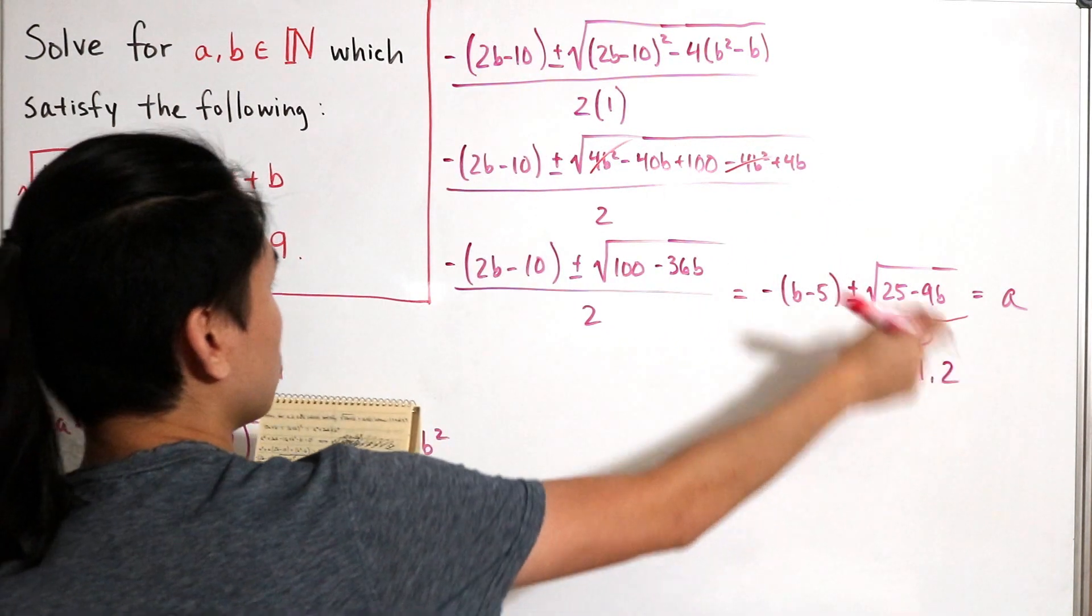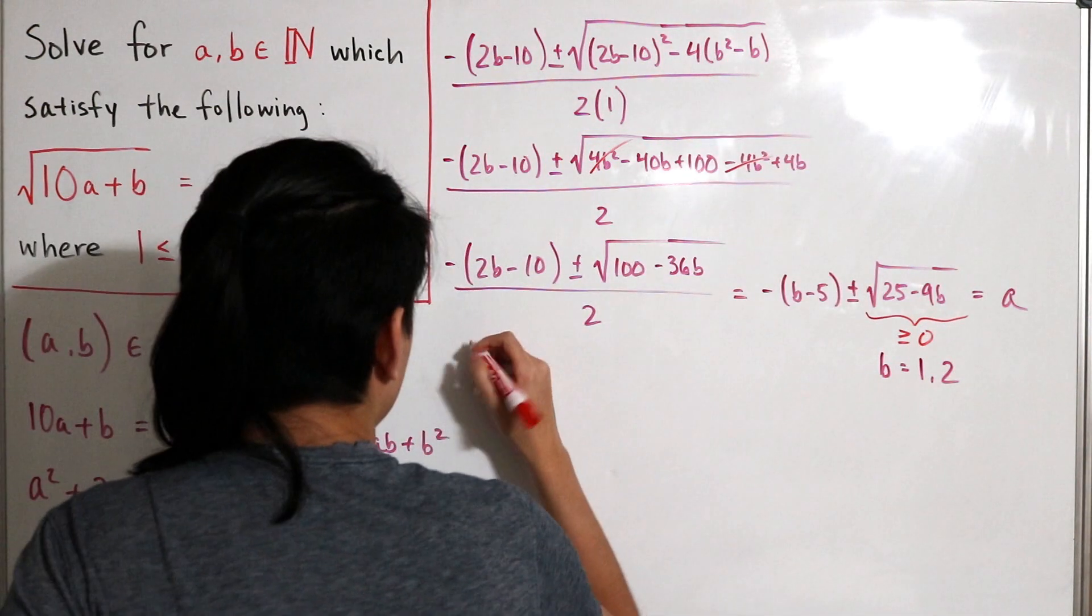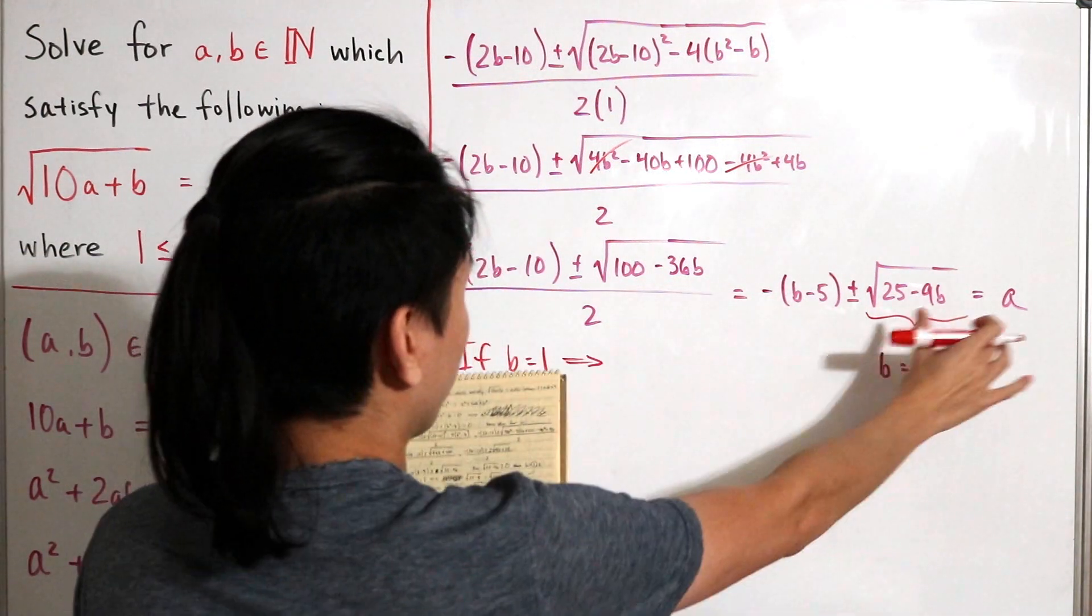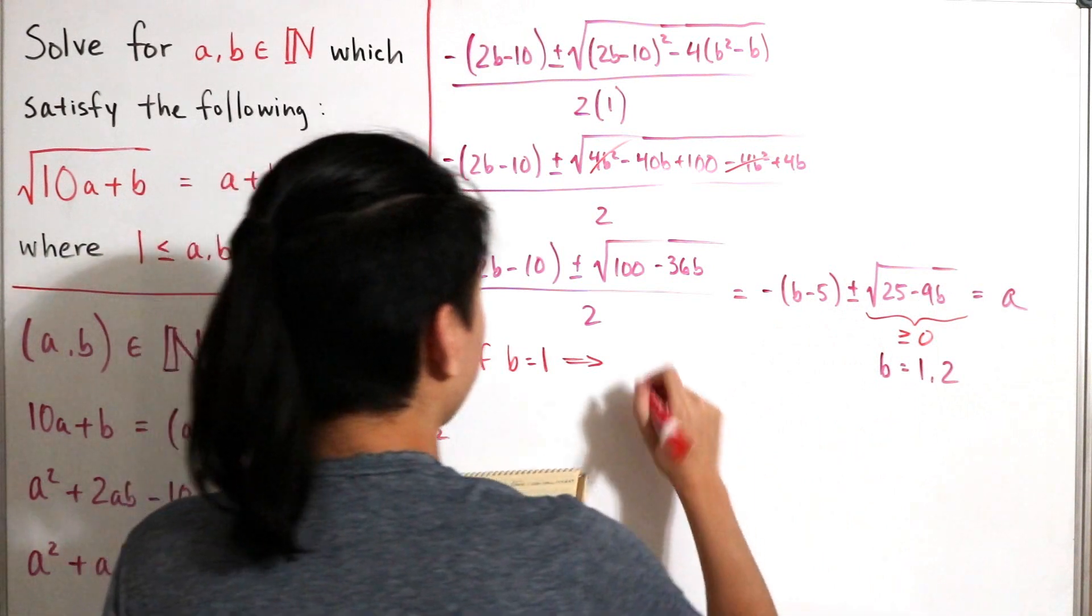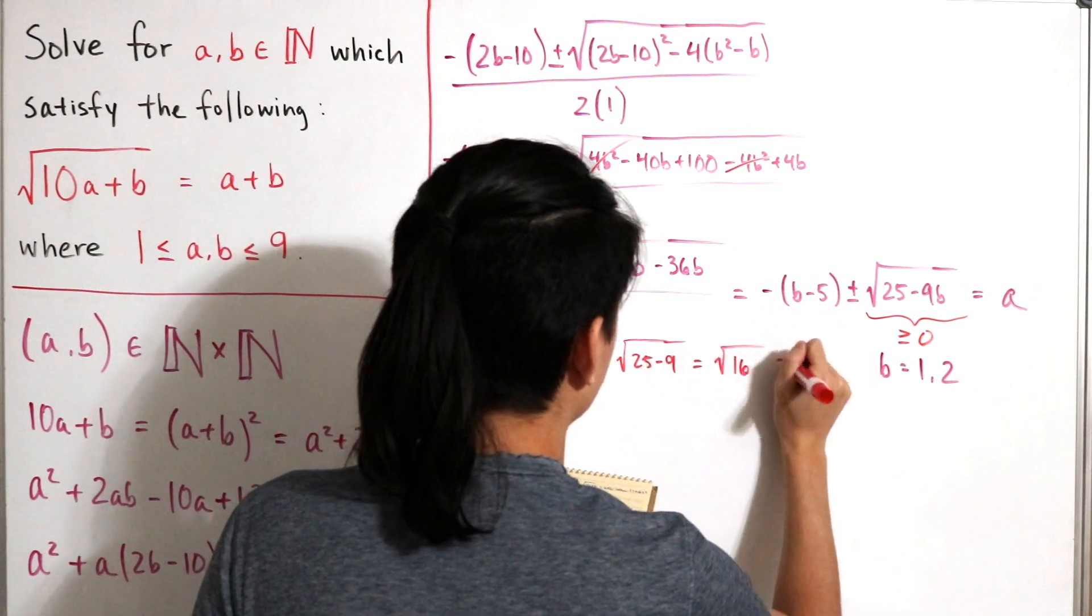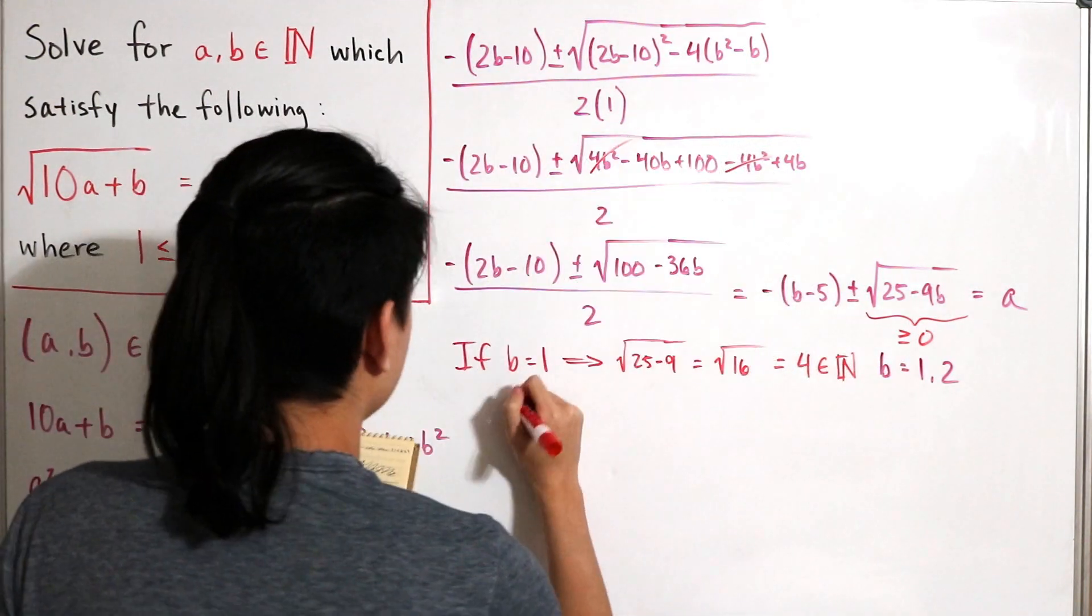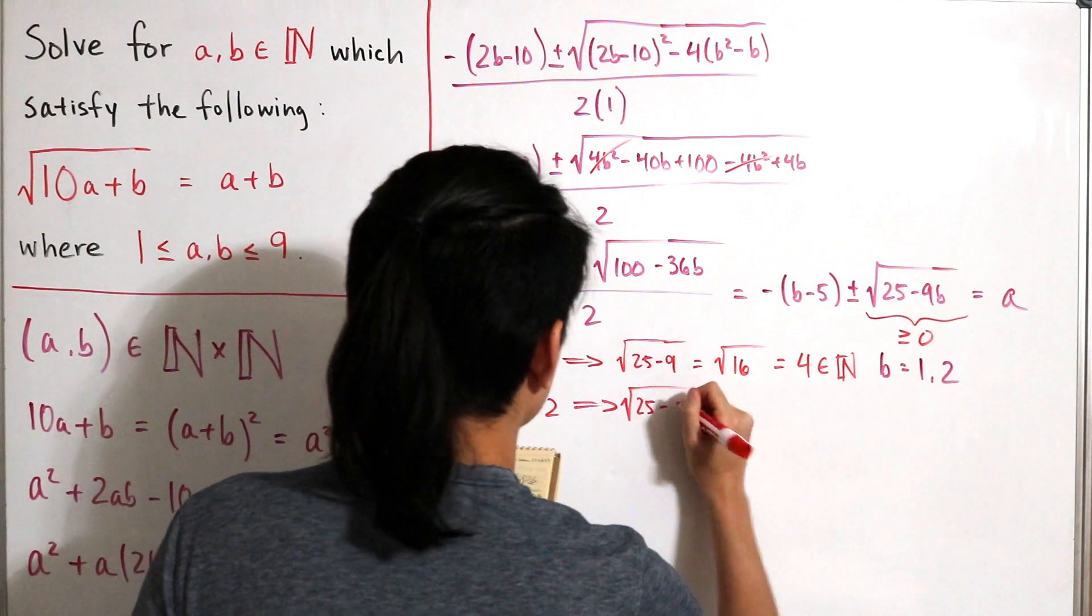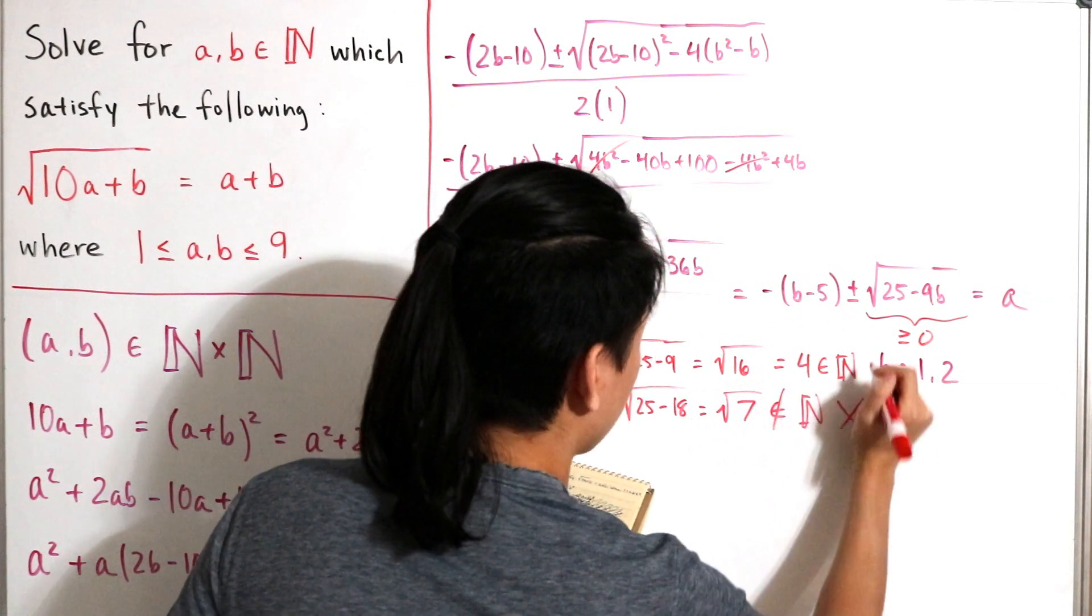So now let's actually plug in 1 and 2 to the equation. So if we say that b is equal to 1, we're paying attention to the square root. So if we plug 1 into here, then we're gonna get that this is just 25 subtract 9, which of course is the square root of 16, which of course is equal to 4. Therefore, it's indeed a natural number, so that actually satisfies. Now, let's see if we plug b equals 2. Then we have 25 subtract 9 times 2 is 18, equals the square root of 7. However, that is not a natural number, so this does not check out.